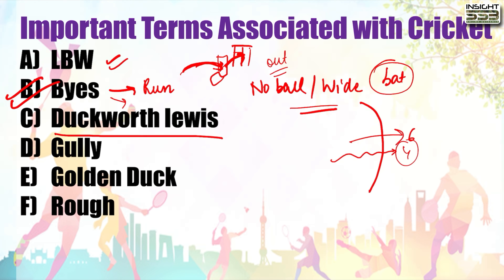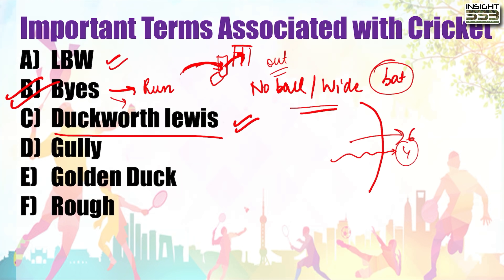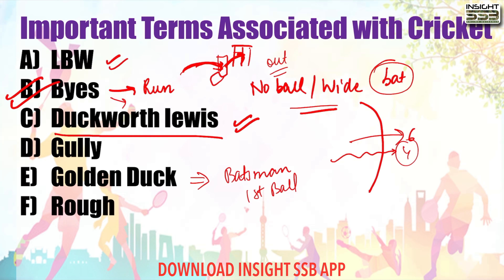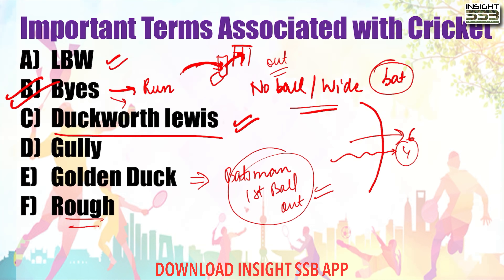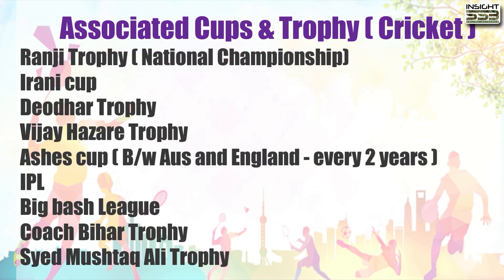The Duckworth-Lewis method: if a game is interrupted, this method is used to find out who the winner is under weather-affected conditions. Gully is a fielding position on the offside, between point and the slips. Golden duck: when a batsman gets out on the very first ball, that is called a golden duck. Rough is a worn-out section on the pitch where there is no grass.